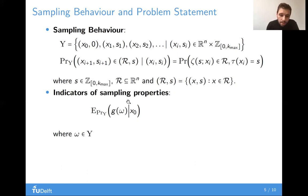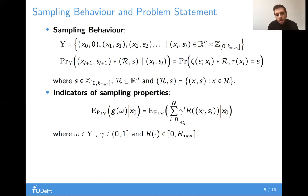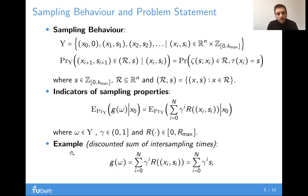Given this, we claim that if you define functions over Y, then the expectations of these functions act as indicators of sampling properties. And in this work, we constrain ourselves to functions that take the form of discounted cumulative rewards, but actually, as we argue later, our framework is actually much more general than that.